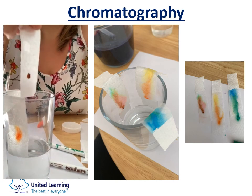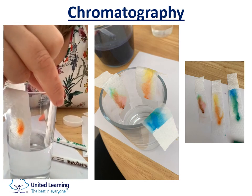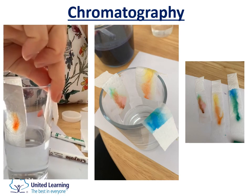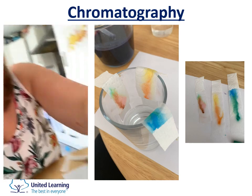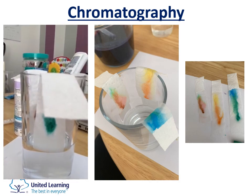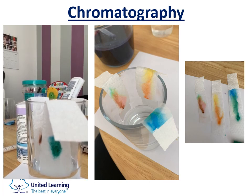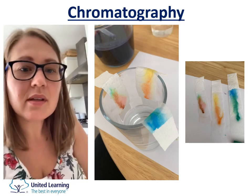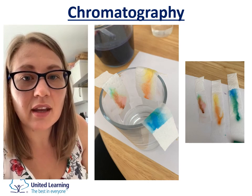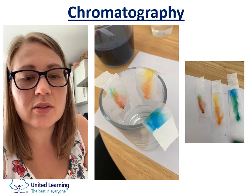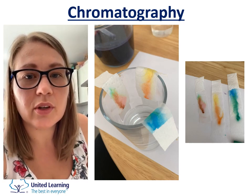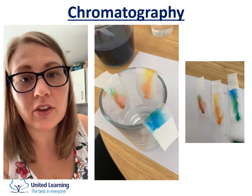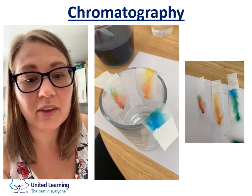So I'm holding that over the edge, and I'll do the same with the green on this side, making sure the spot itself doesn't go in the water. The whole idea is that the water needs to run up the kitchen roll. You can already see that the green has started to separate into some blue, and the orange has already started to separate into some yellow. What's happening is that the different dyes in the inks have different solubilities — how easy they are to dissolve in water.